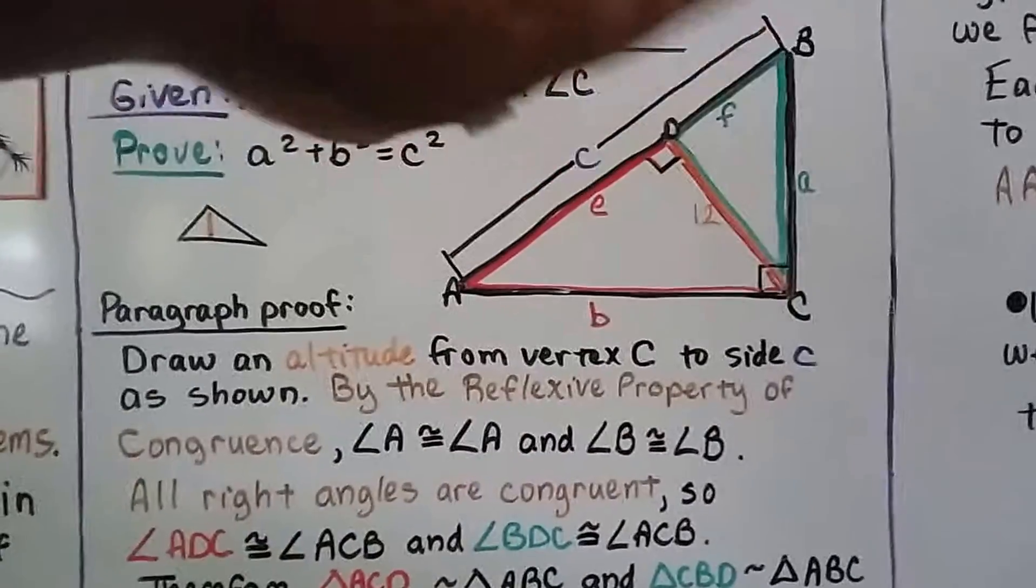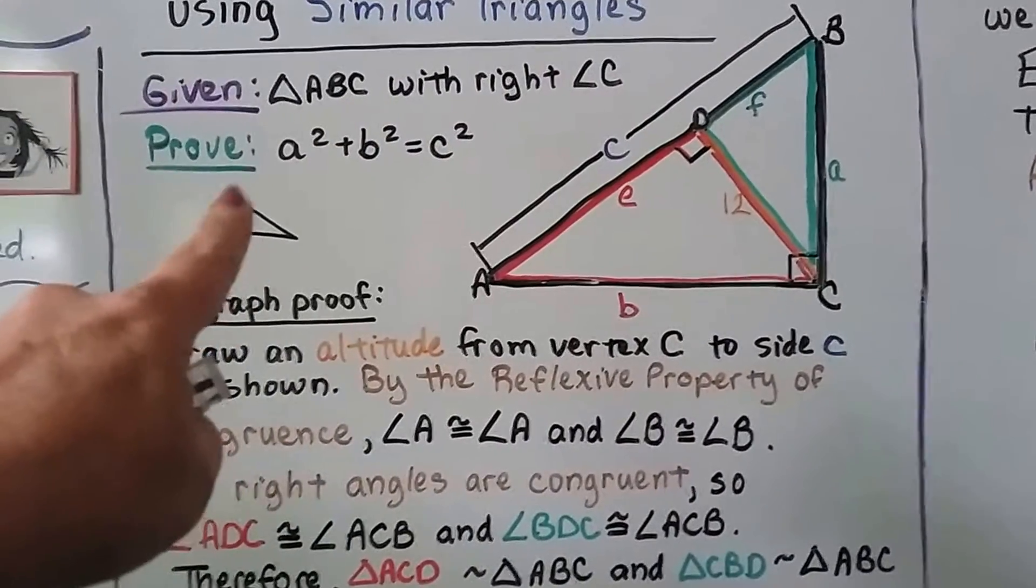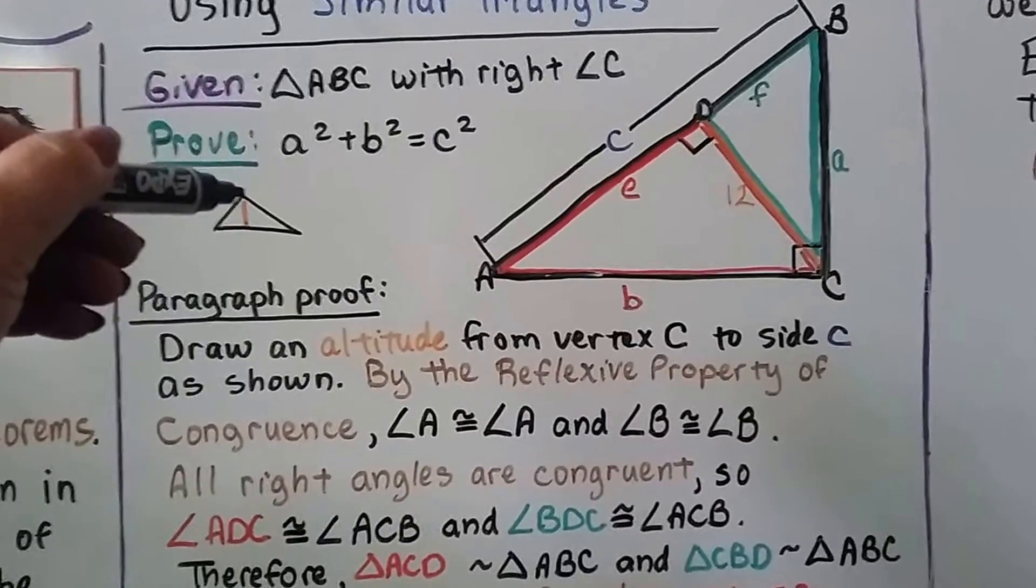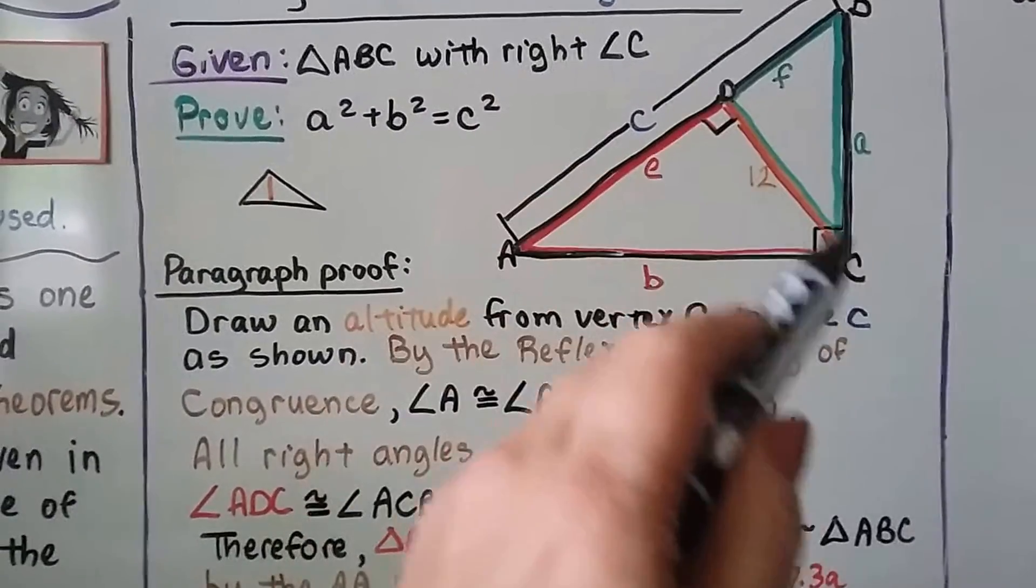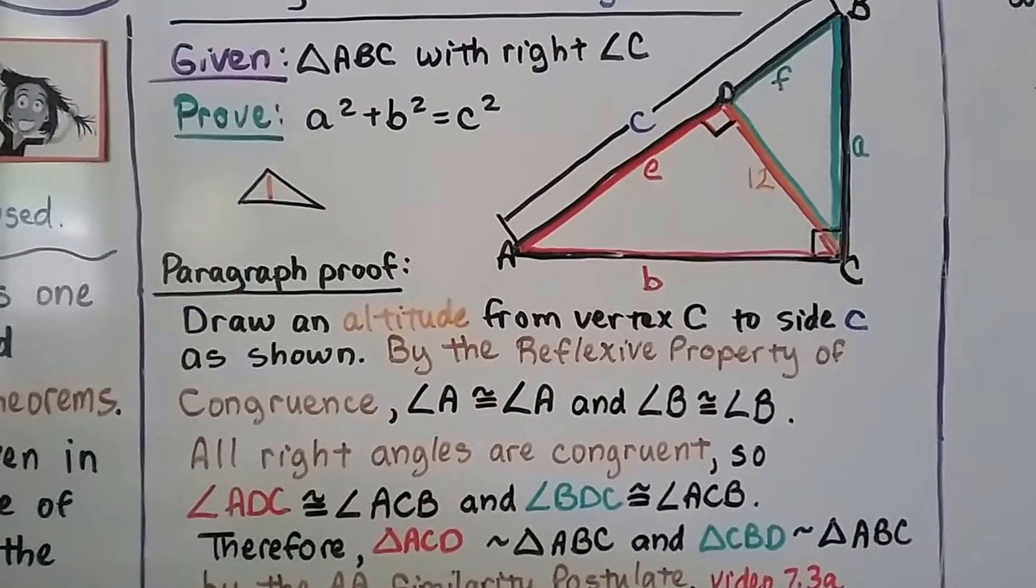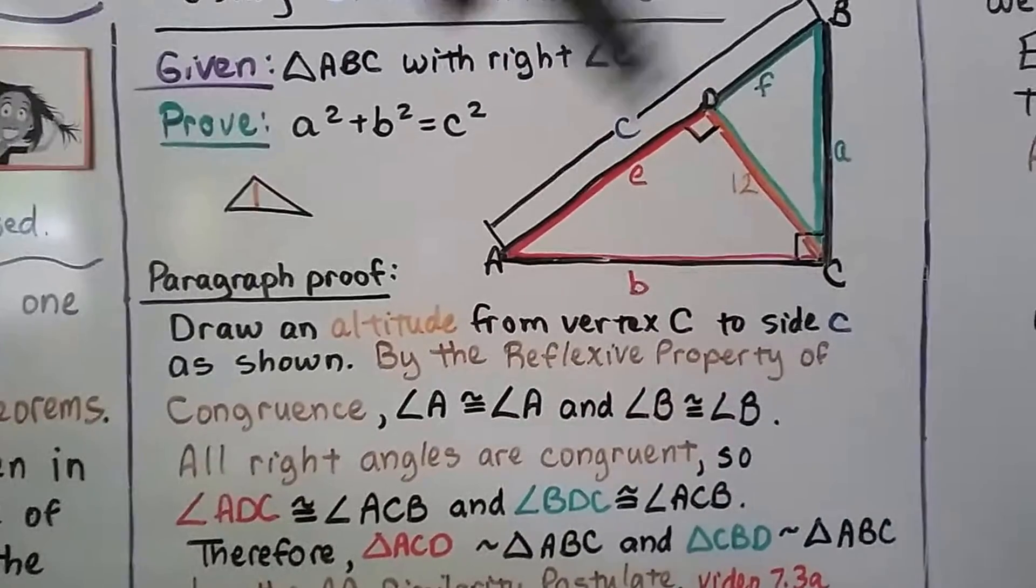imagine this whole thing is turned like this. So there's our altitude coming out of C, which would be up here, and then D would be down here. So that's our altitude. We do it from vertex C to side C.